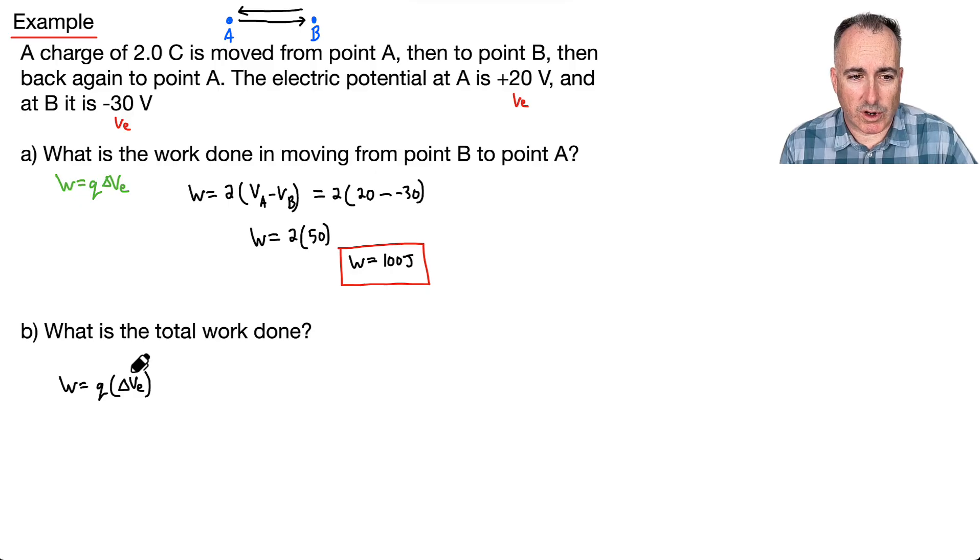And what's the total work done? Well, it starts at A, and when we say total work done, well remember, it went from A to B back to A again. So that means really, if I wanted to do this, I would say, okay, that means it would be Q times VA, that's the final point, minus VA, the start point. Because remember, it started here, it went to B, sure, but it finished here. It started at A, and it finished at A. Remember, because it said it went from A to B, then back to A.